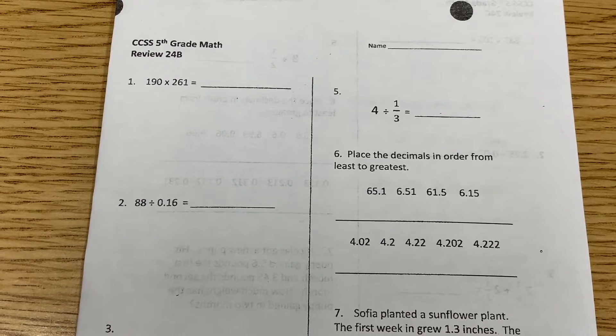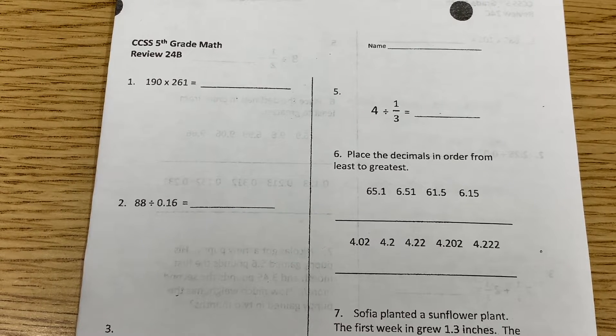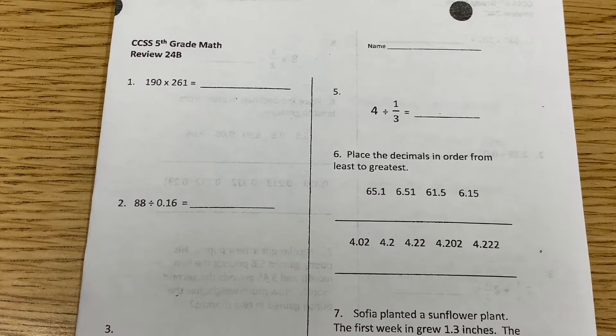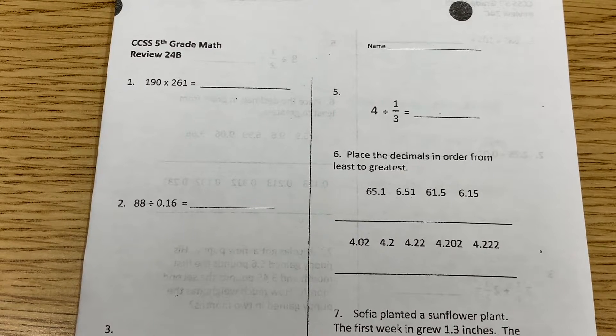You're on number one. Number one says 190 times 261. Do we have any decimals in this number? No. So will there be any decimals in our answer? No.